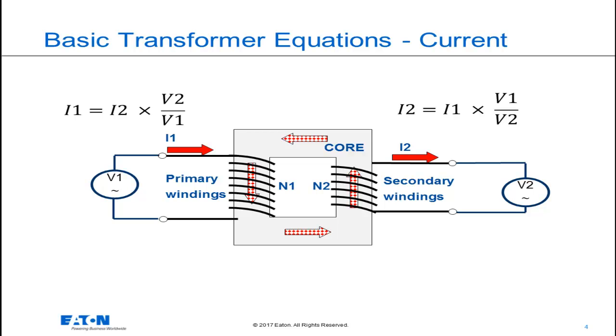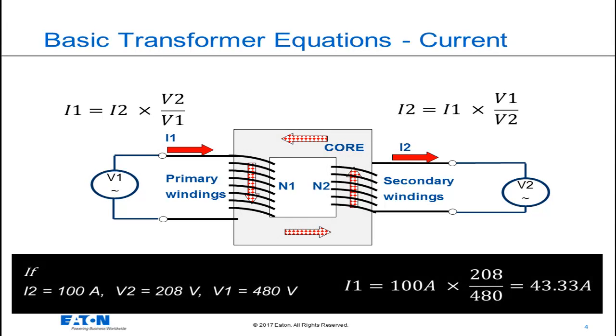To understand this, let's use an example. If we know the primary and secondary voltage of this transformer is 480 to 208 volts and we know the secondary current is 100 amps, we can calculate the primary current using the standard equation for I1. This shows that when this transformer is supplying 100 amp load, the primary current will only be 43.33 amps.